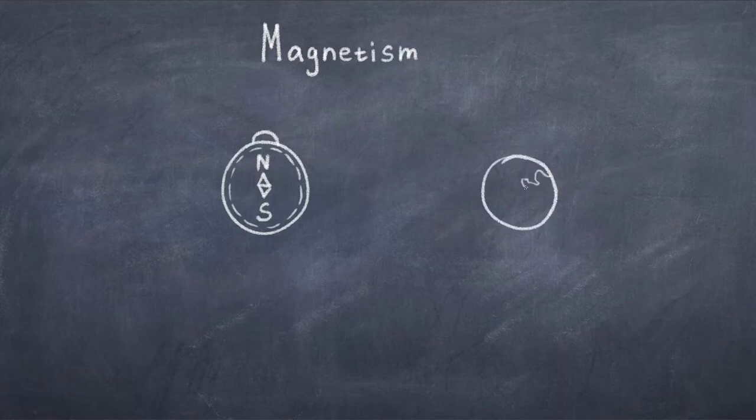You can understand it like this. Field lines must go from north to south. This is achieved by putting a north and a south pole together. But if you, for instance, put two north poles together, the lines don't want to connect, so they push each other away.